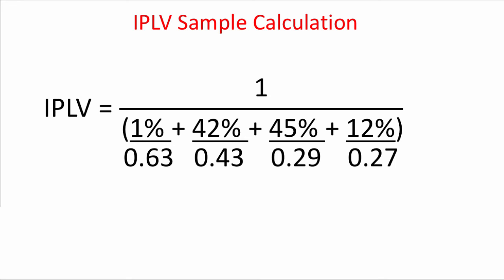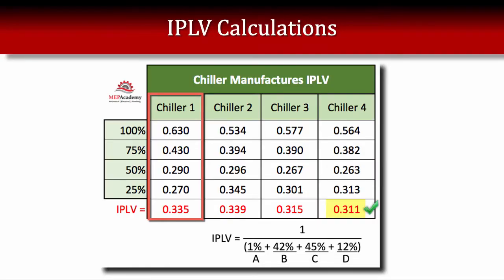Here are the values: at 1% of the time the EER is 0.63; 42% of the time it's 0.43; 45% of the time it's 0.29; and 12% of the time it's 0.27. You can see the chiller is hardly running at full load, and full load actually has the worst EER. Using a spreadsheet with those four values — 0.63, 0.43, 0.29, 0.27 — the result is an IPLV of 0.335.